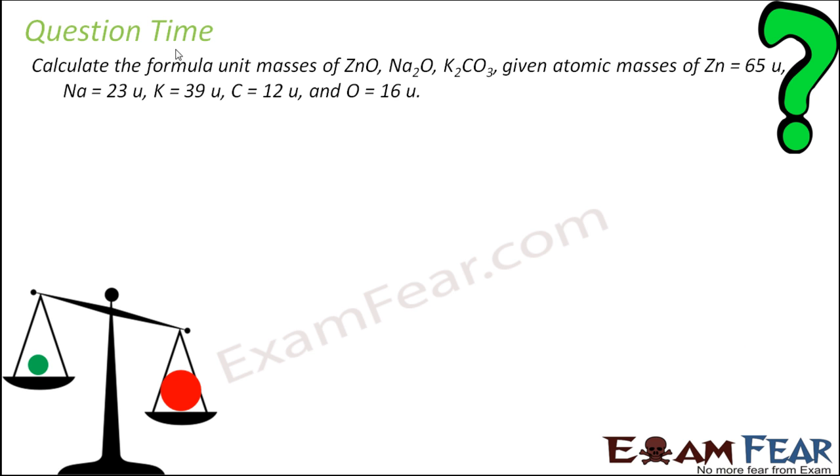Let's take one more numerical. We have to find the formula unit mass for ZnO, Na2O, K2CO3. Formula unit mass is used because these are all ionic compounds. It is also given the atomic mass of zinc, sodium, potassium, carbon and oxygen. Pretty easy then, right? So, let's find ZnO first. It has one zinc, one oxygen. One zinc is 65 plus one oxygen is 16. You add this, you get 81 unit.